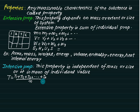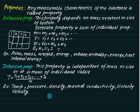Temperature, pressure, velocity, and density all fall in the category of intensive property. Specifically, temperature, pressure, density, thermal conductivity k, viscosity mu, and velocity V are all intensive properties.